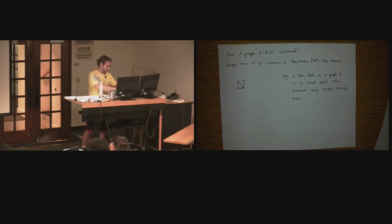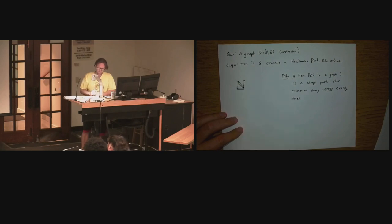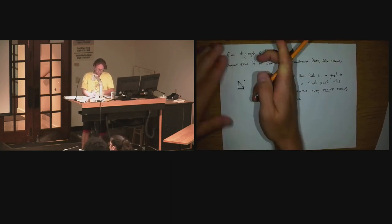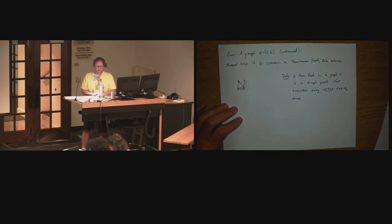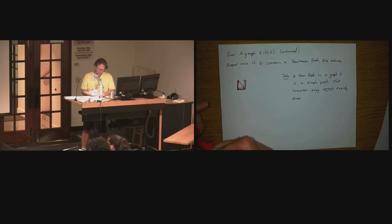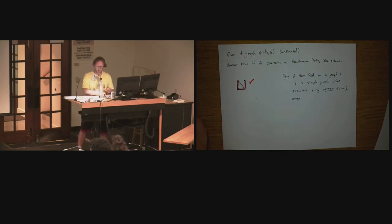Let me draw a path here. There's a path — actually a cycle. Is it Hamiltonian? Did I traverse every vertex? Nope — I left one out. Here's another path. Does that traverse every vertex? Not yet. But if I continue and go here, then here, then here — is that a Hamiltonian path? Yes. So there are graphs with and without Hamiltonian paths.